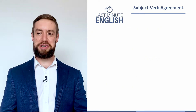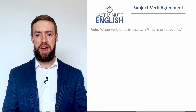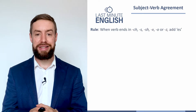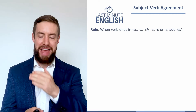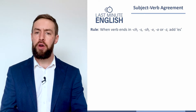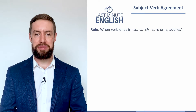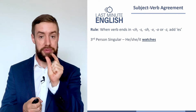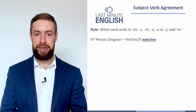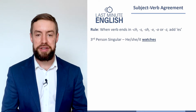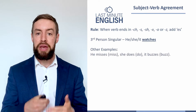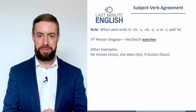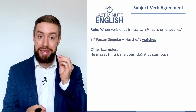Not every verb is as simple as 'play.' If we have verbs that end in certain letters — like CH, S, SH, and a few others — we add ES. For example, 'he watches': it's 'watch,' ending in CH, so we add ES. A couple of other examples: he misses, she does, and it buzzes — all of those take ES.